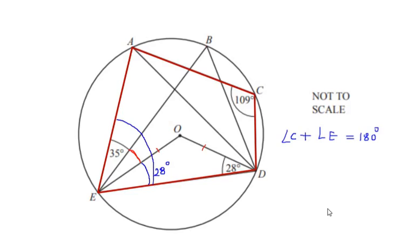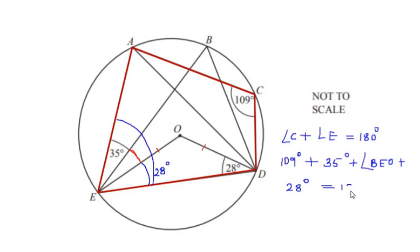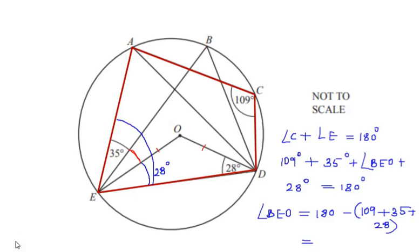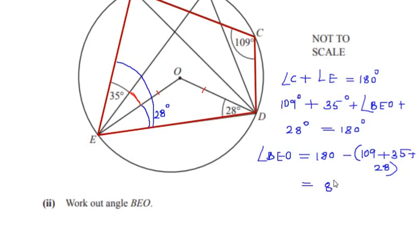Angle C is given as 109 degrees. The full angle E is broken into three parts: 35 degrees plus angle BEO plus 28 degrees, and these all add up to 180 degrees. Solving for angle BEO: it equals 180 minus 109 minus 35 minus 28, which gives 8 degrees. Angle BEO is 8 degrees. I hope you have understood all the steps. If you liked the video please like, share and subscribe to my channel — thank you for watching.